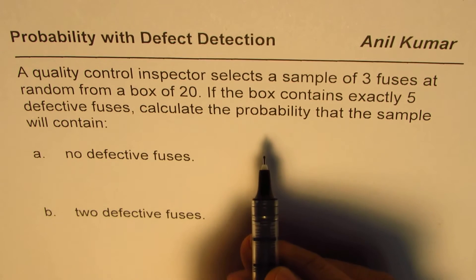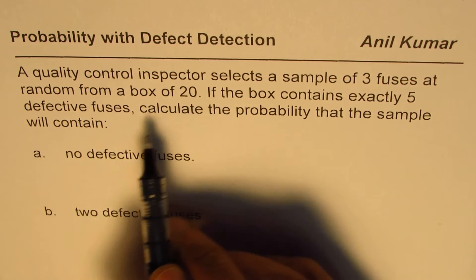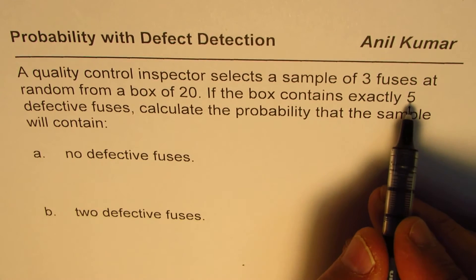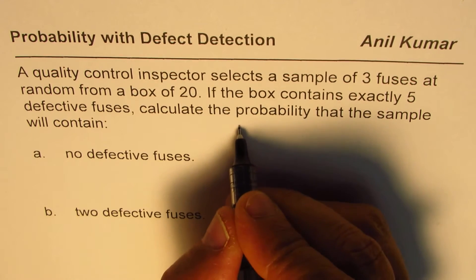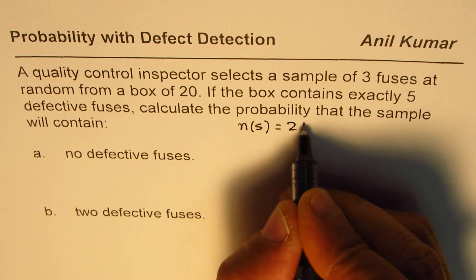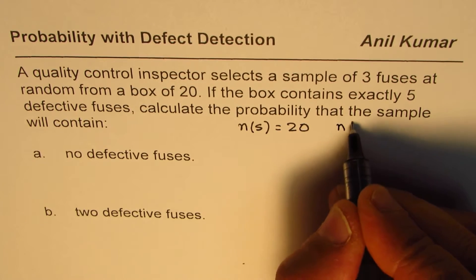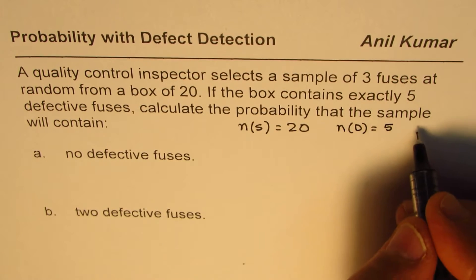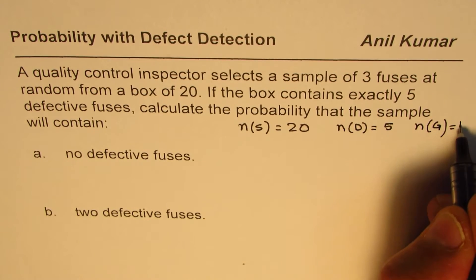Now in this case, we are selecting three fuses out of 20. And if we want all to be not defective, we know defective pieces are five. So what we know here is that the sample space is 20. As far as the defective pieces are concerned, let me write that as ND, defective pieces are five. Now good pieces for us are 20 minus 5, which is 15.